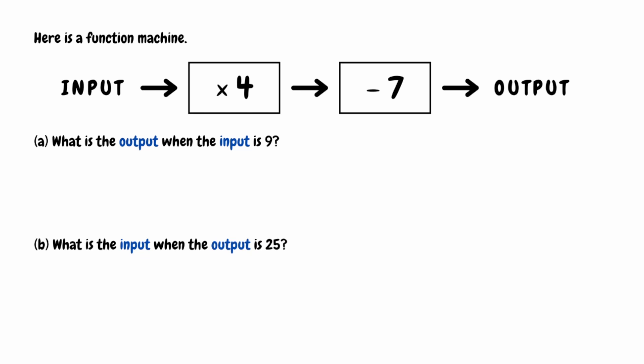For part A, what is the output when the input is 9? Following from left to right, we do 9 multiplied by 4, which is 36. We then do 36 take away 7, which gives us 29. So when our input is 9, our output is 29.